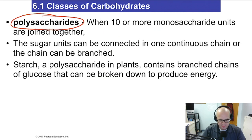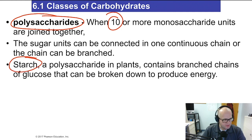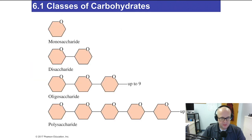A polysaccharide consists of 10 or more monosaccharide units joined together. So there you have it: monosaccharides, disaccharides, and polysaccharides. Polysaccharides are sometimes referred to as starches — they're just chains of numerous glucose molecules bonded together. We'll talk more about those later.